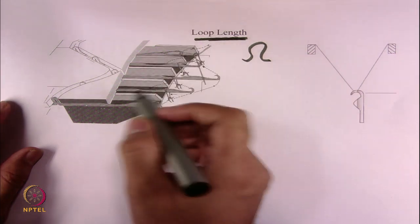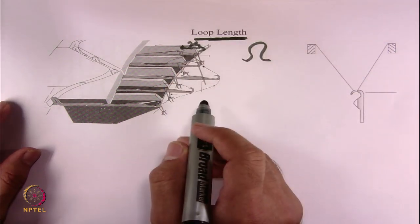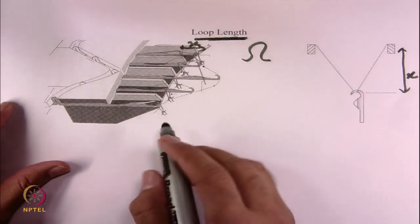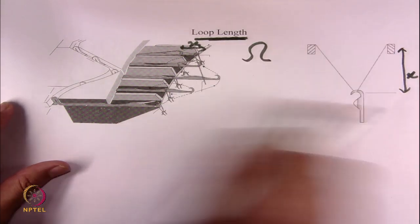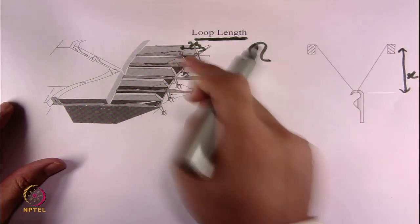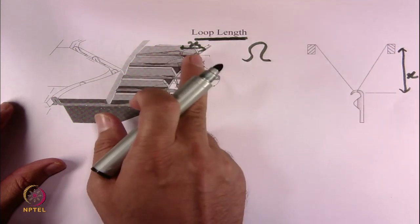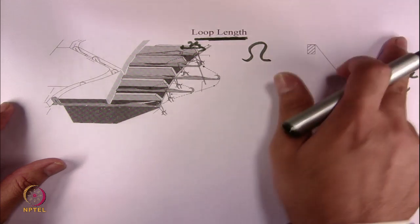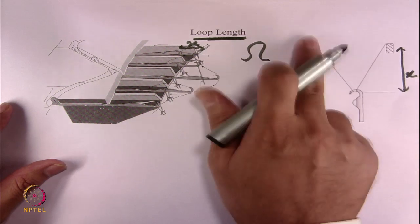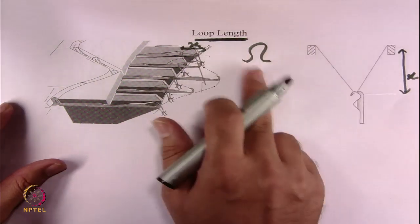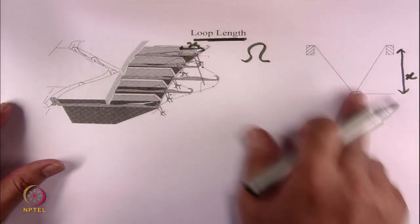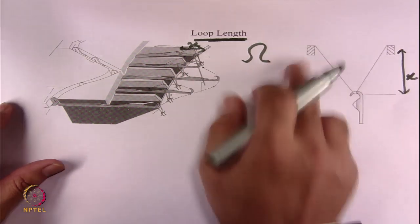To calculate the loop length, we can find out how much the needle actually pulls the yarn inside the bed. If we take one needle projected on the right side, with the two trick walls shown, you can see the needle is pulling the yarn inside. When it pulls the yarn, this is the actual length of yarn being pulled. Once the feeder goes away and the old loop is knocked out, this straight segment of yarn bends into the form of a loop. So if we can find out the distance of this yarn length, that will equal the loop length.